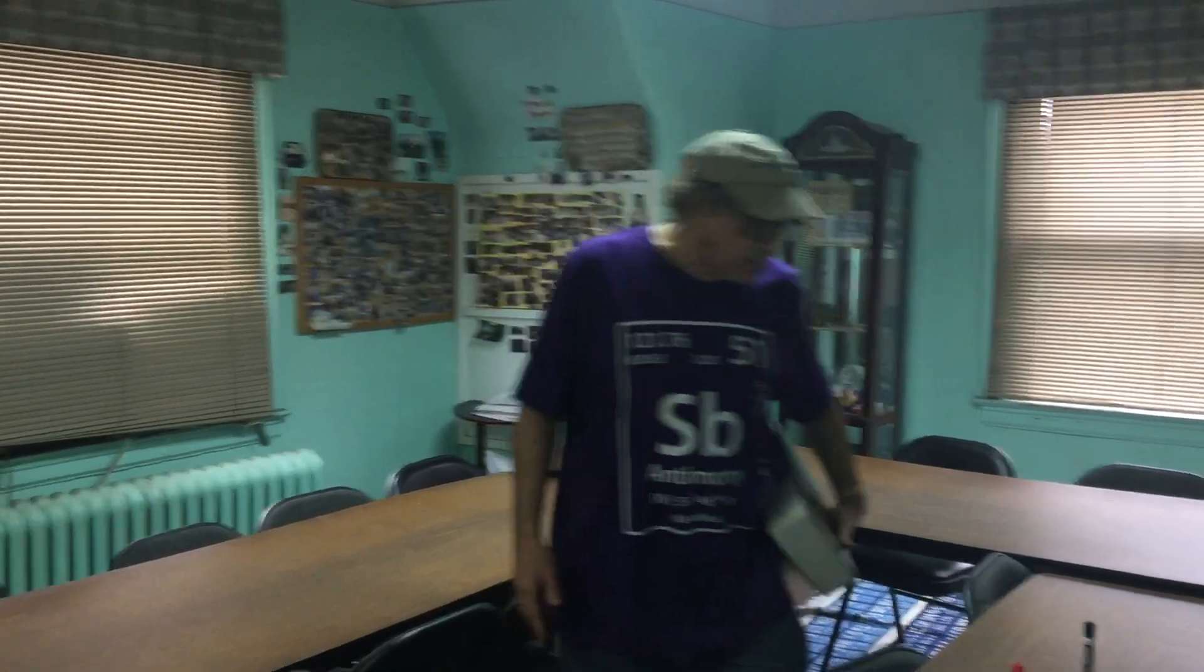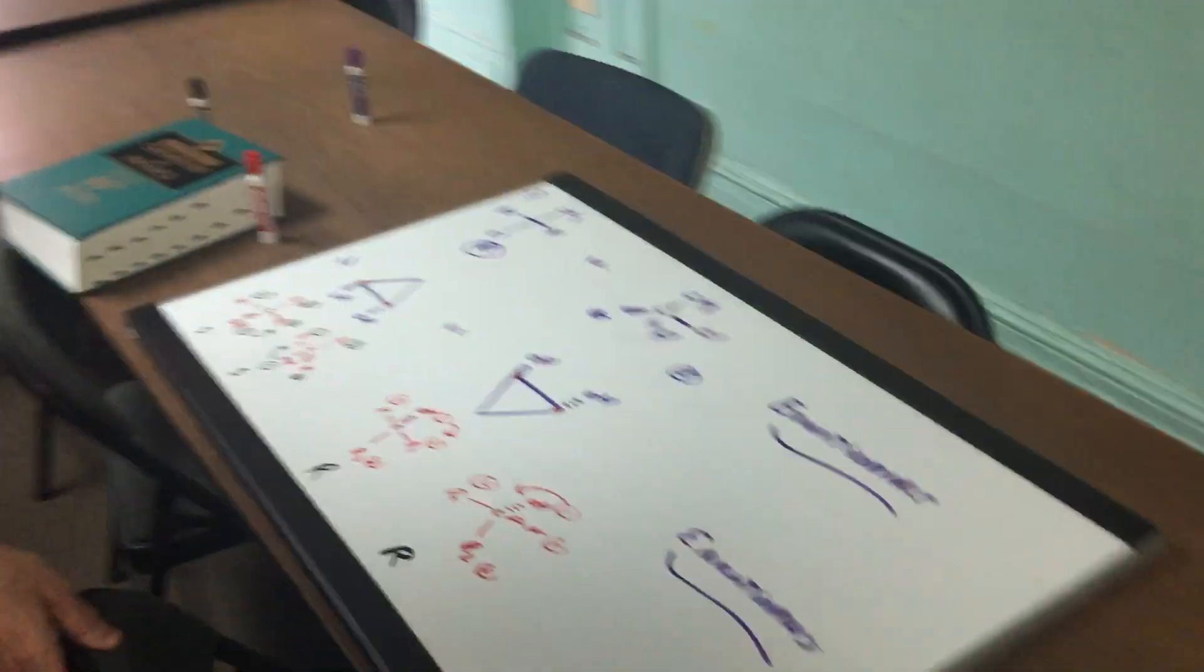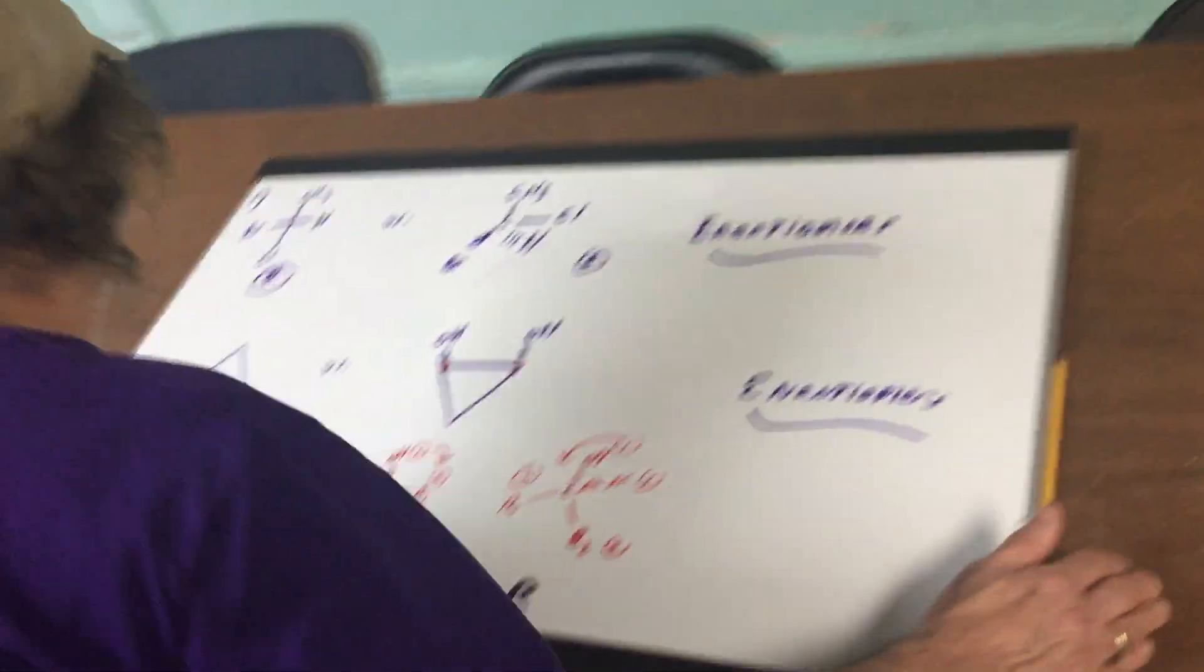I like to go over a very important type of question that you're going to see on the DAT exam, and that's to look at two structures and tell me what is their relationship. Are they identical? Are they enantiomers of one another? Are they diastereomers? So let's come around and let's have a look. I've done some other tapes on this, so I want you to check them out as well.